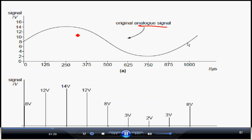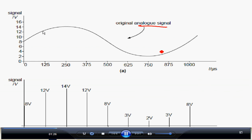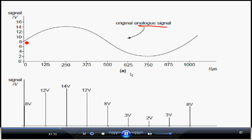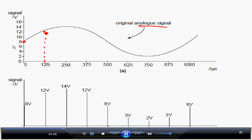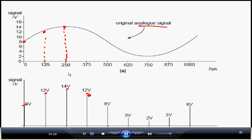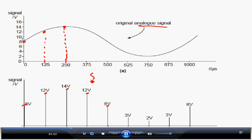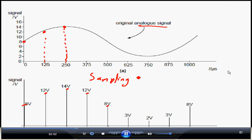You are given a waveform representing an analog signal, maybe music or speech. What you do is pick voltages at various time intervals - in this case every 125 microseconds. You take the voltage value at 0, at 125, at 250, and so on, and you get values like 8 volts, 12 volts, 14 volts. This process of picking voltage values of the analog waveform at various instances is called sampling.